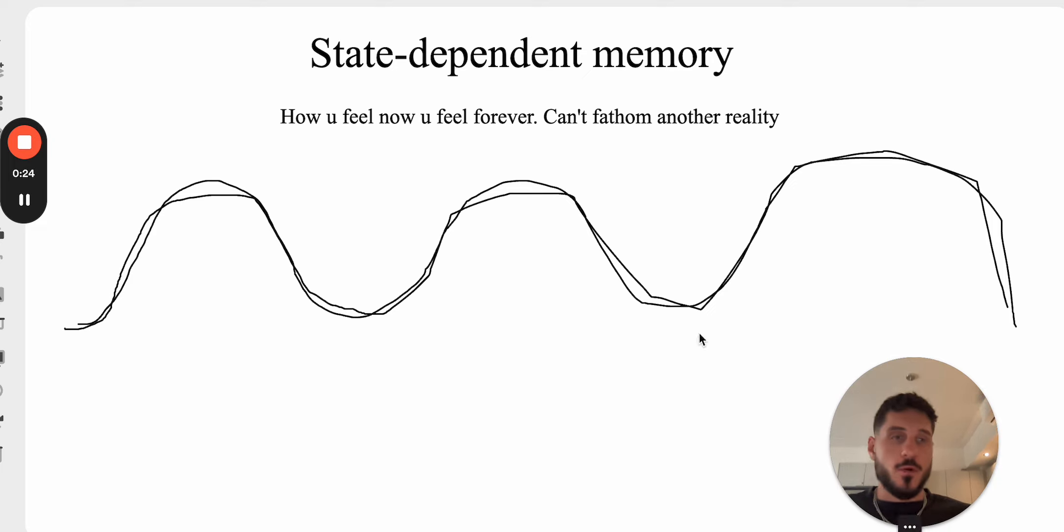So state-dependent memory. Before we get into the actual idea, you have to learn kind of why this is helpful. When you use state-dependent memory is when you're in a fucking low. When shit is not going your way, when you feel like crap, basically in your mind, everything is going to feel like everything you want to do is basically working uphill.